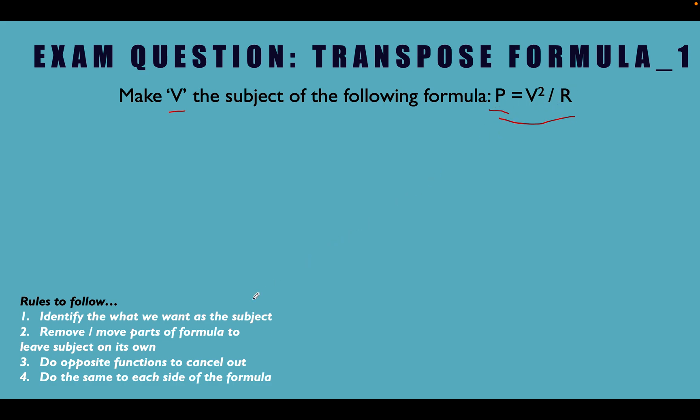And we'd do the same to this side, which is the last rule. Do the same to each side of the formula to balance it out. We'd have to multiply by R on this side as well. So let's do this example together now and see where we get with this.